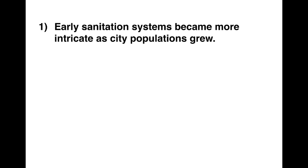We go straight to the first question — we don't waste time reading the passage. The first question is: 'Early sanitation systems became more intricate as city populations grew.' True, False, or Not-Given? I underline key words: early sanitation systems, more intricate, city populations grew. The hardest word is 'intricate' — IELTS reading is a vocabulary test. Intricate means complex or complicated. So: did early sanitation systems become more complicated when city populations grew?